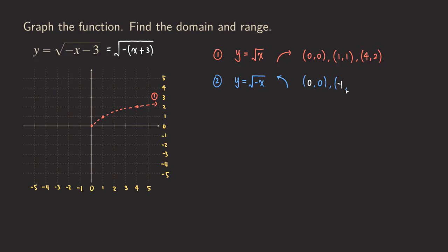The y value doesn't change. For the third key point, we had four originally — now it's negative four, the opposite of the original value, and then there was a two. This is a reflection about the y-axis, which is a horizontal reflection.